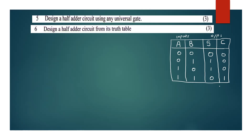From the truth table, the Boolean expressions are derived. Sum equals 1 in two cases, giving Sum = A'B + AB'. The carry output corresponds to A AND B, so Carry = AB. This gives us the complete expressions for the half-adder.